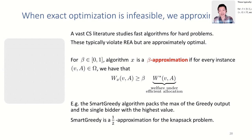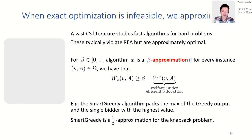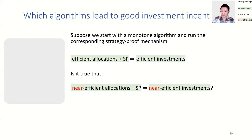If a monotone algorithm has efficient allocations and is strategy-proof, does it lead to efficient investments? Yes — we know that from the Rogerson theorem. Now, if it has nearly efficient allocations and is strategy-proof, does it lead to nearly efficient investments? Let me define nearly efficient investments more precisely.